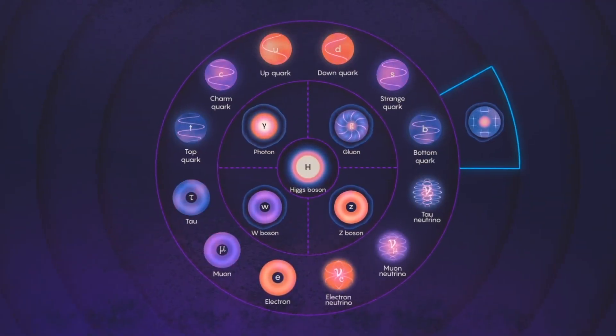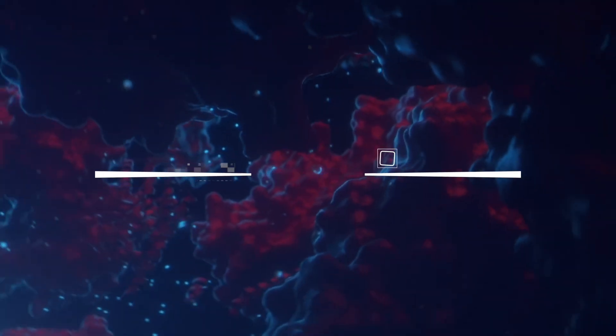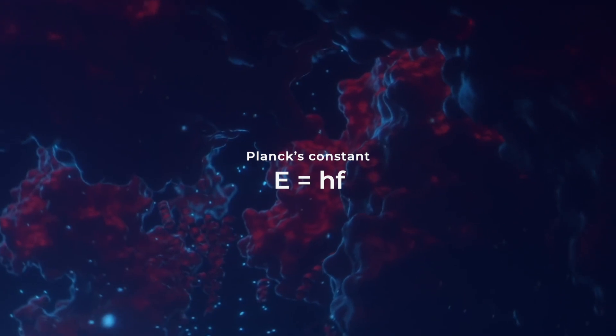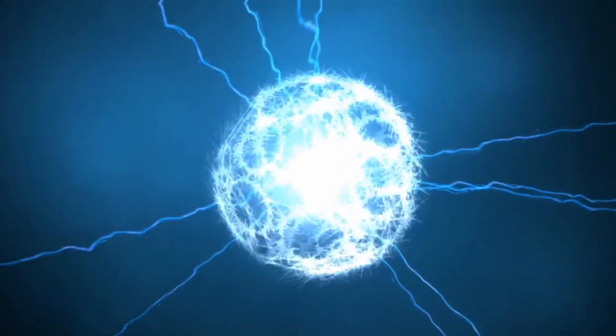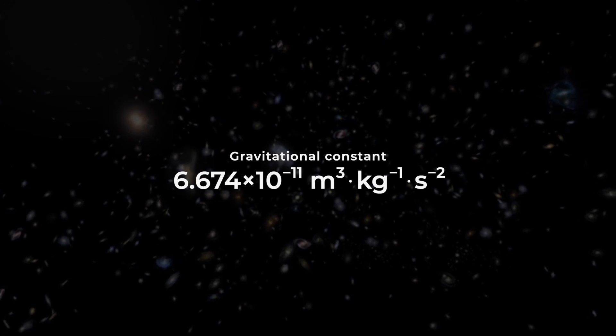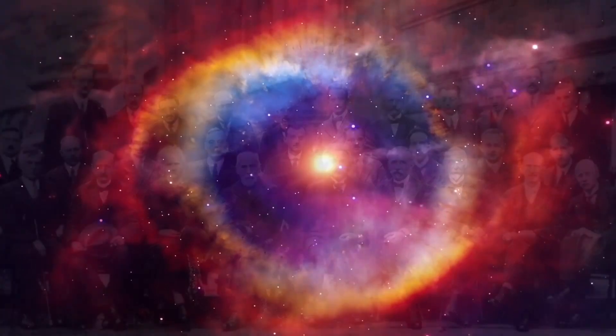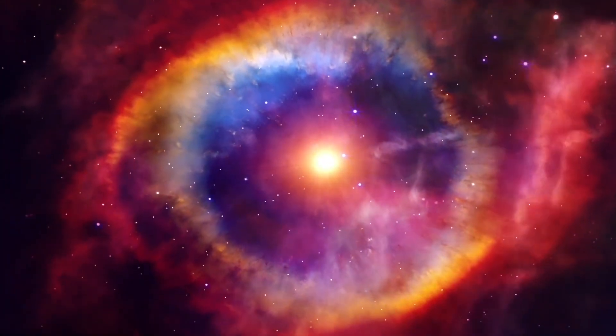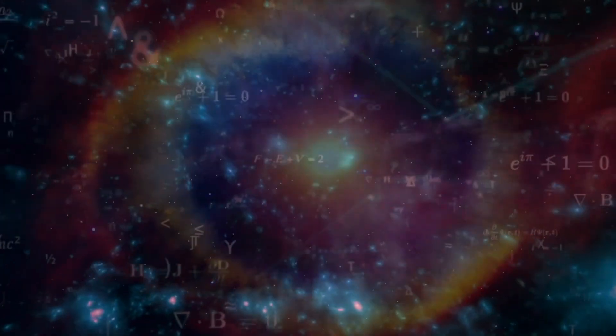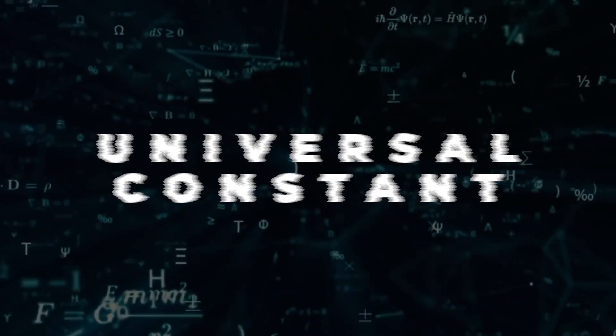Constants are the key to how the universe is held together and how it functions, but we are still unsure why they have the values that they do. They exist at all levels of reality, down to the smallest scale using Planck's constant, all the way up to the macroscopic scale of the gravitational constant holding galaxies and solar systems together. It's actually believed by some scientists that if they are able to have a complete model of the universe, all of the many universal constants that have been found will be able to be combined into one universal constant.